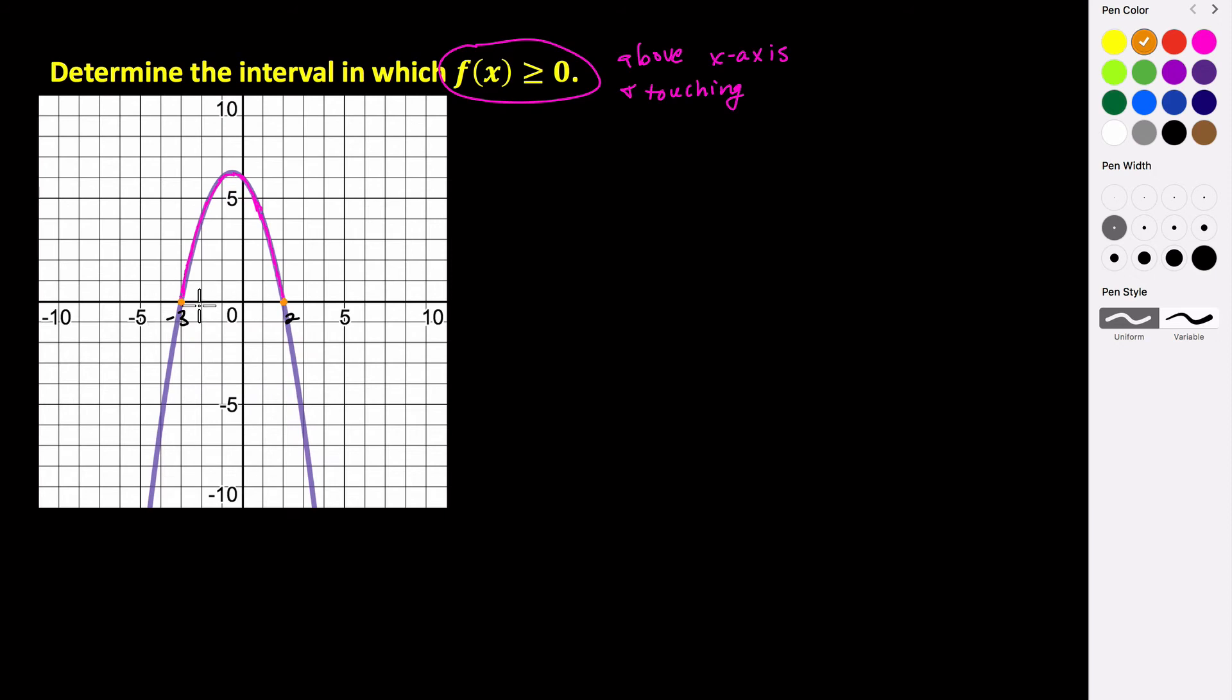If I picked x being negative 2, I come up here and I see that my graph is above the x-axis. At negative 1, it still is positive. At 0, it's positive, 0.5, it's positive. So all of the values in between negative 3 and 2 on our x-axis are giving us positive values of y.